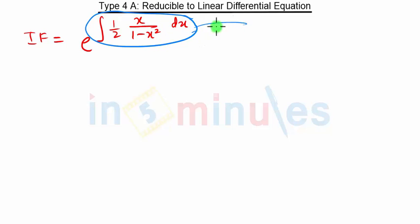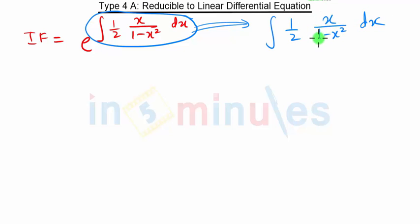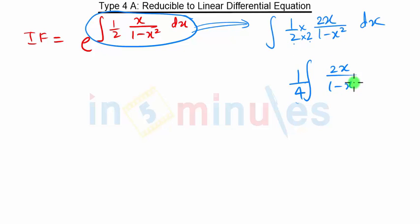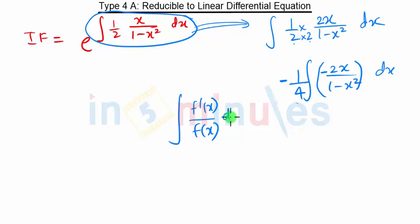The integration is (1/2)∫x/(1 − x²) dx. I multiply and divide by −2, writing it as −(1/4)∫(−2x)/(1 − x²) dx. The reason is the property: ∫f'(x)/f(x) dx = log|f(x)|. Here f(x) = 1 − x², so f'(x) = −2x, which fits this form perfectly.